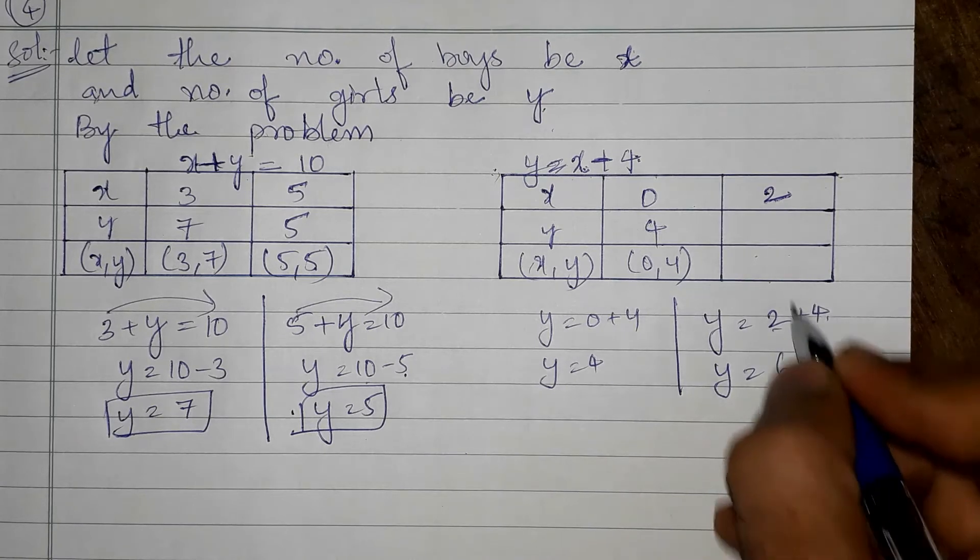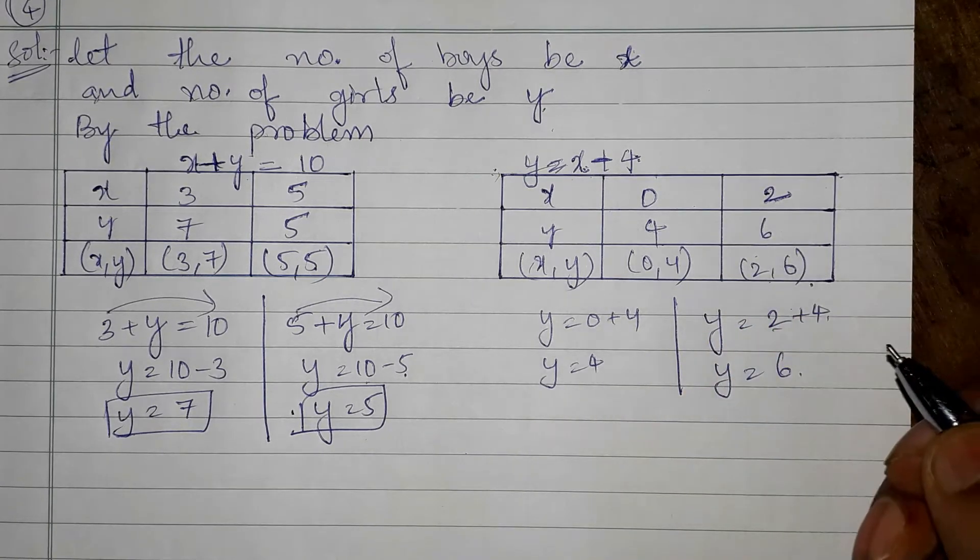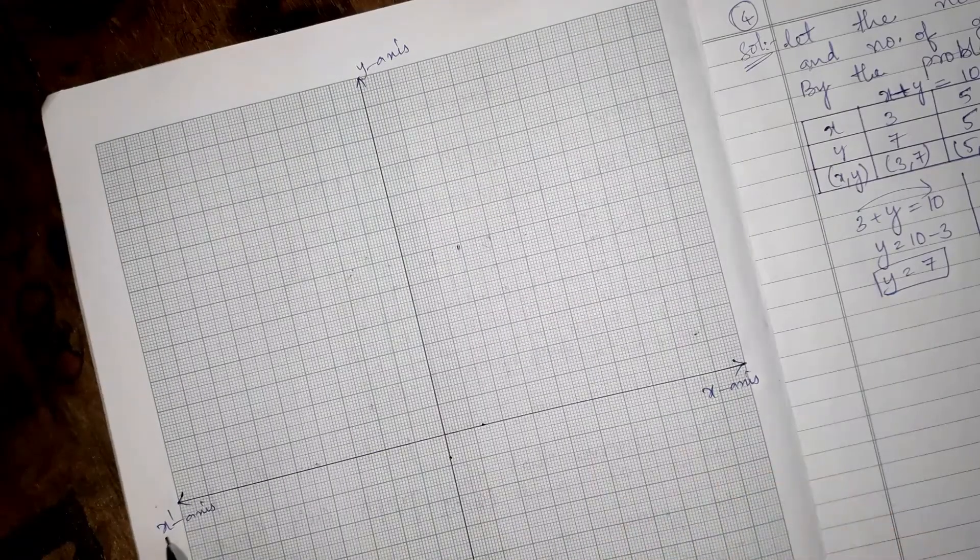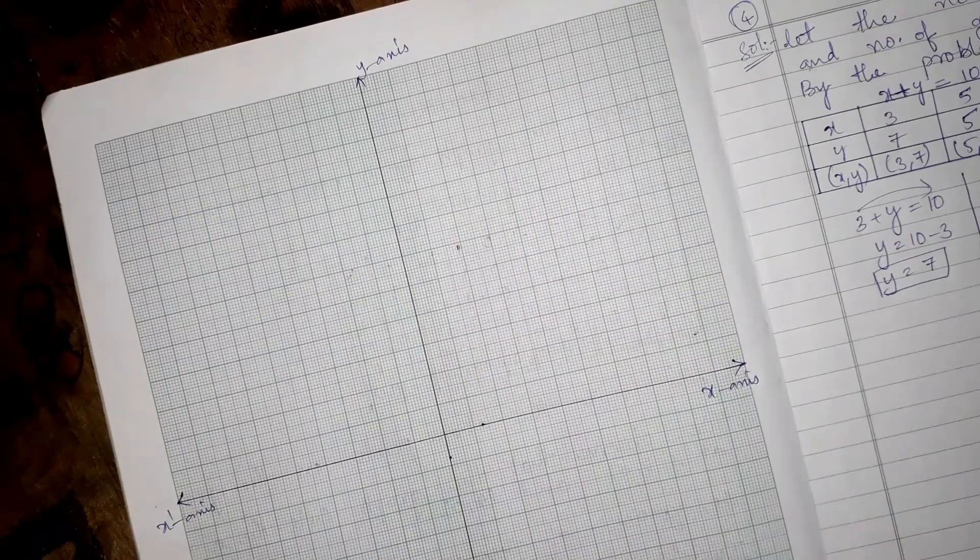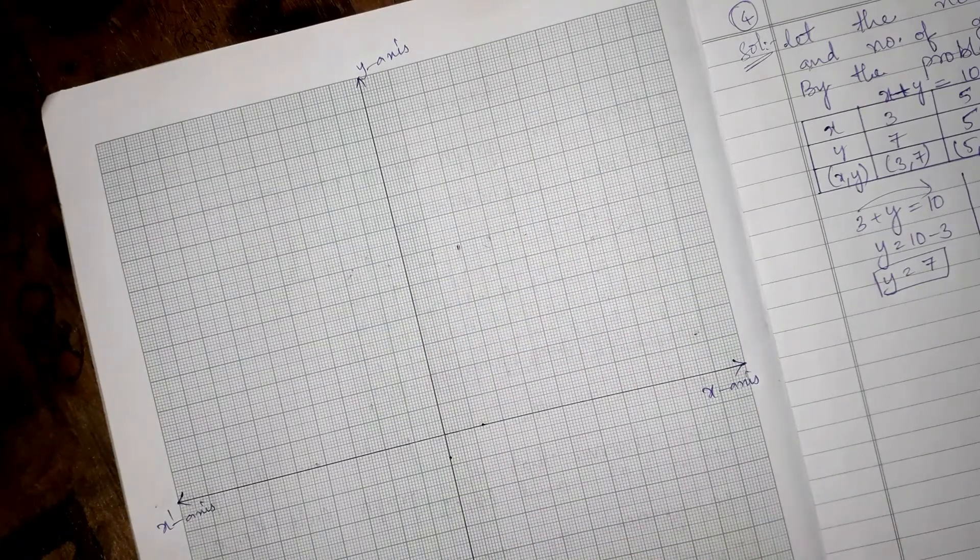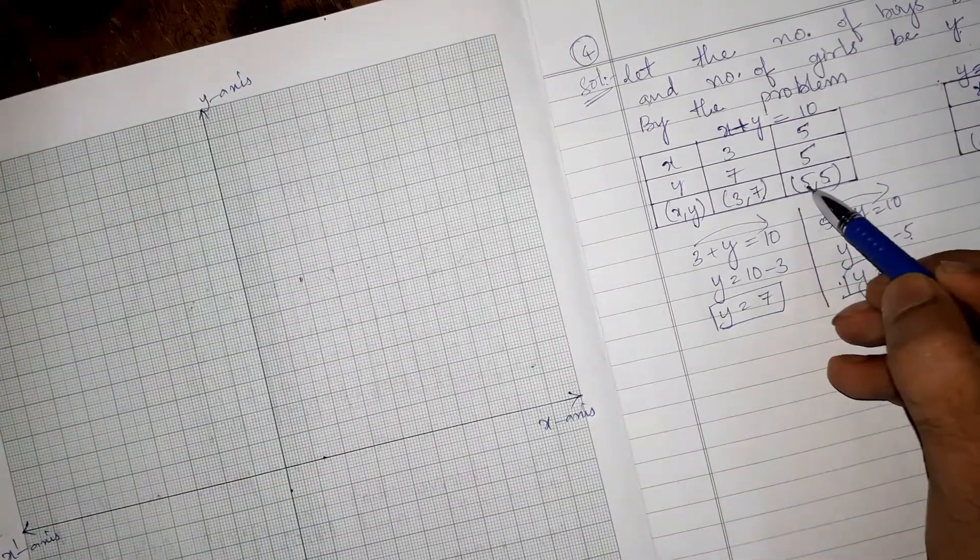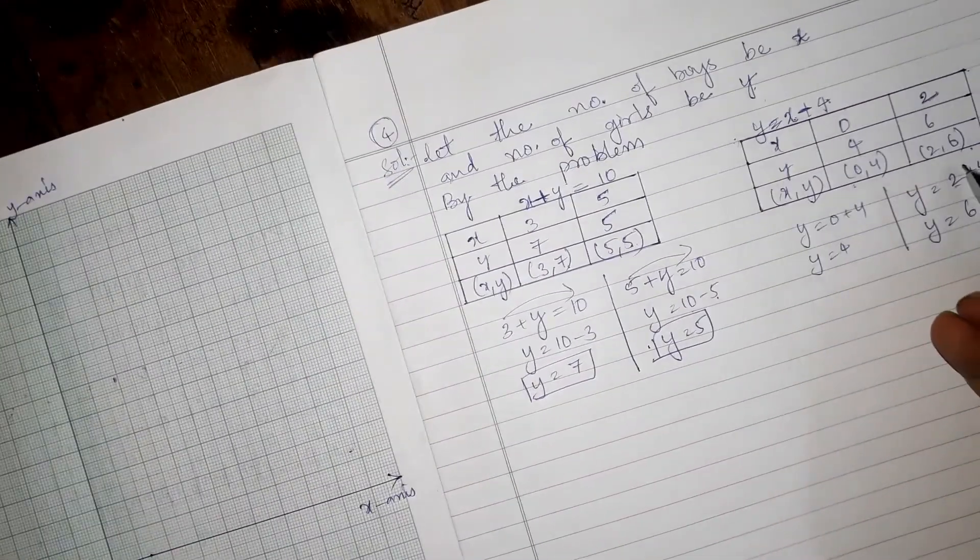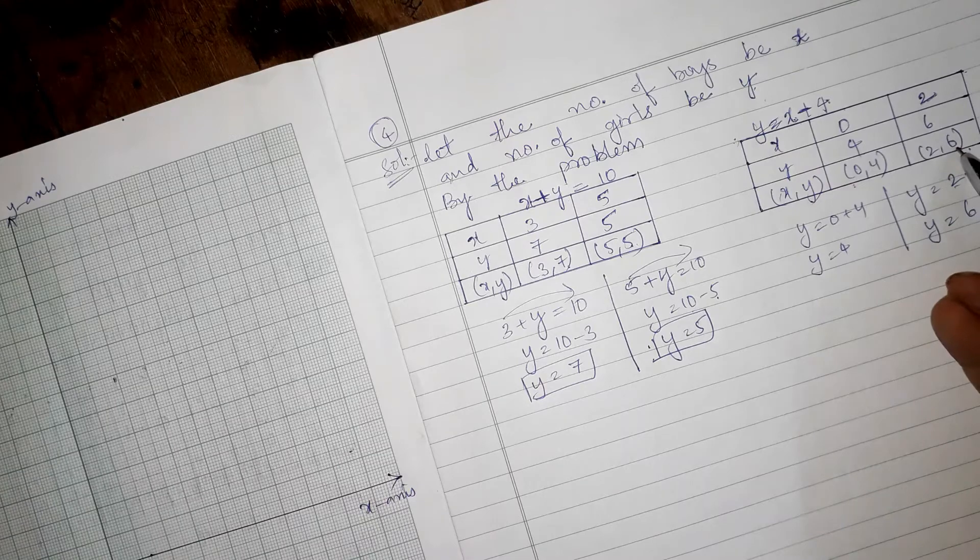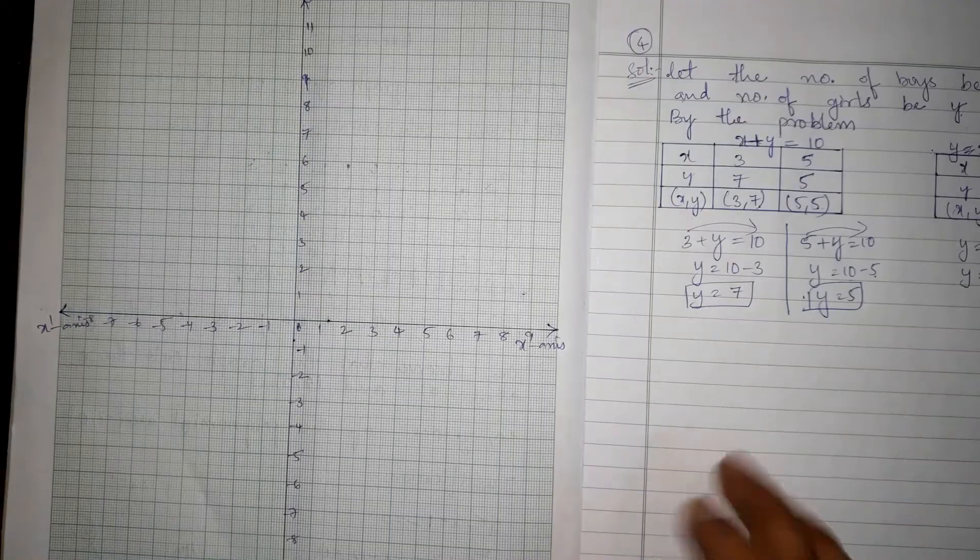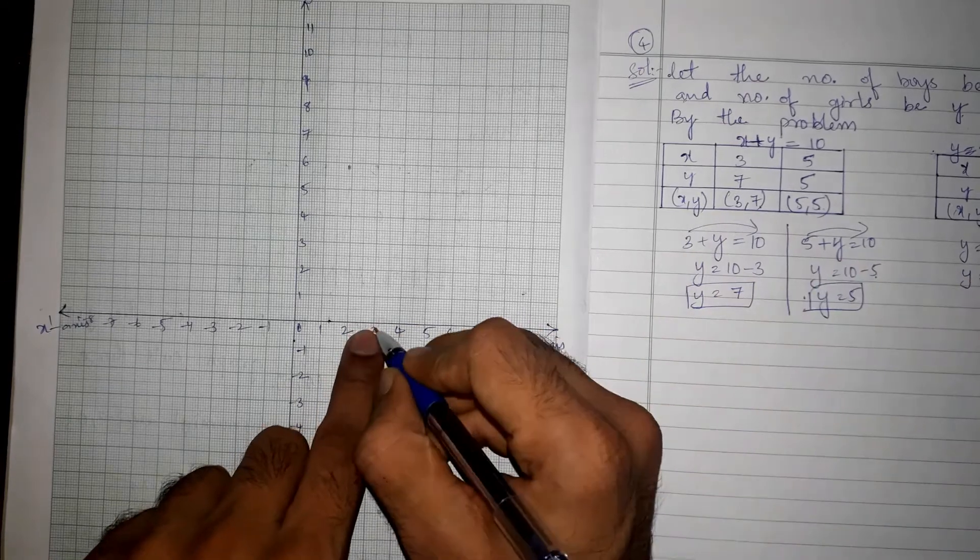Let us draw the graph for this. I have drawn the x-axis and y-axis. So let us find out how we are going to put the units. Since here you can see 3 comma 7, 5 comma 5, and 0 comma 4, and 2 comma 6, these are the points. They are very close to each other, that's why we can take 1 centimeter equals 1 unit.